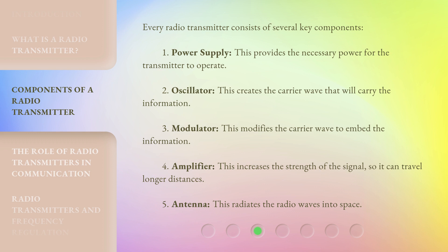Third, the Modulator, which modifies the carrier wave to embed the information. Fourth, the Amplifier, which increases the strength of the signal so it can travel longer distances. Fifth, the Antenna, which radiates the radio waves into space.